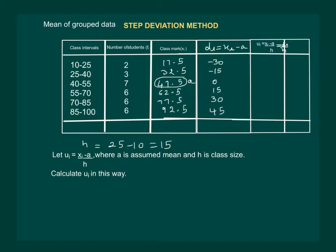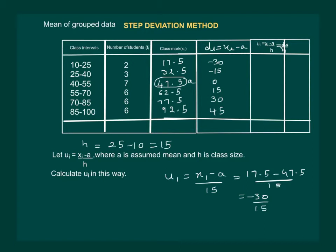U1 will be X1 minus A, whole divided by 15. We have X1 as 17.5 and A as 47.5, so (17.5 minus 47.5) divided by 15 equals minus 30 divided by 15, which is minus 2. Or we can directly do Di divided by H: minus 30 divided by 15 is minus 2, then minus 1, 0, 1, 2, and 3.